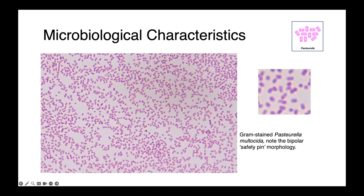When we zoom in a little bit more, you can appreciate that safety pin morphology. This organism here has a very easy-to-see bipolar staining — it's darker on either end, leaving a slightly lucent or pinker area in the middle. It looks somewhat like the cartoon.